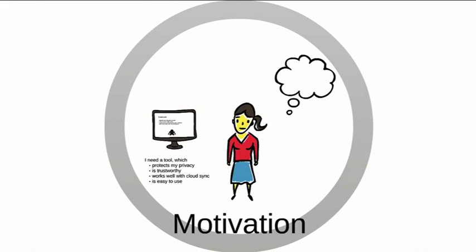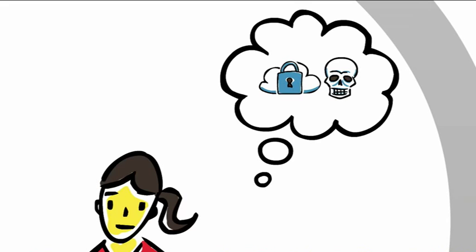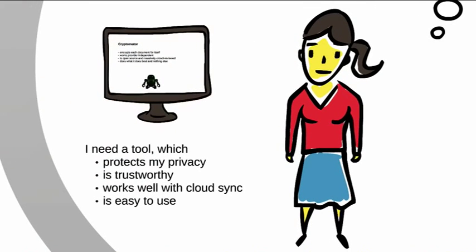Say hello to Alice. She wants to store some files in the cloud. She's heard that the cloud could be potentially dangerous — maybe she read worrisome news articles about celebrity photos getting hacked, or watched a Hollywood movie that puts the cloud in a bad light. She read that encryption might solve the problem. Alice is looking for a tool that uses encryption to protect her privacy, works well with cloud synchronization, and is easy to use — because if it's not easy to use, Alice wouldn't even bother trying it.